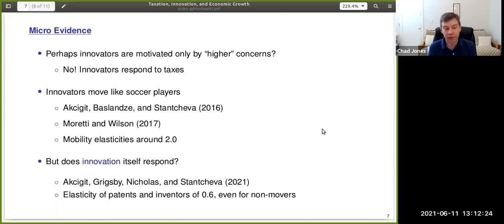Is that just shuffling the deck chairs on the Titanic? Or does innovation itself respond to taxes? Well, the new paper coming out in the QJE by Aksajit, Grigsby, Nicholas and Stancheva shows even if you look at the non-movers, the elasticity of patents or inventors or citations with respect to keep rates is on average something around 0.6. So still very, very high, maybe higher than typical estimates in the public finance literature. And so I think there's lots of evidence that innovation responds to taxes.